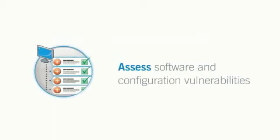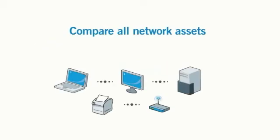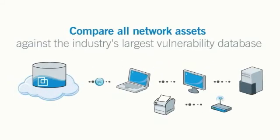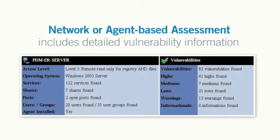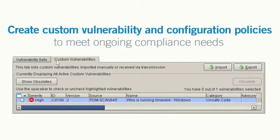Assess software and configuration vulnerabilities. Lumention compares all network assets against the industry's largest database of software and configuration vulnerabilities. Each network or agent-based assessment includes detailed vulnerability information that ranks the severity of the threat, identifies the number of systems affected, and provides steps for remediation. Create and enforce your own custom vulnerability and configuration policies to meet your organization's ongoing compliance needs.